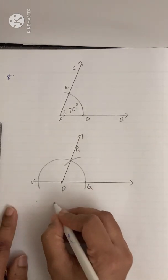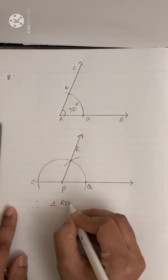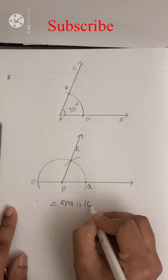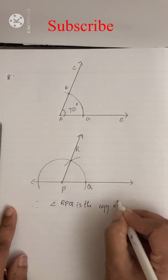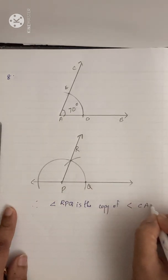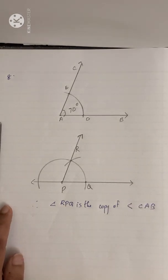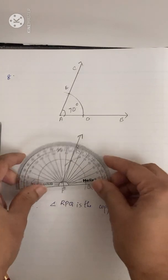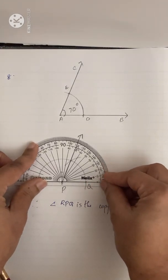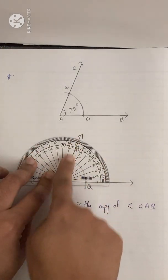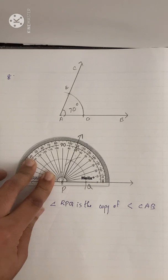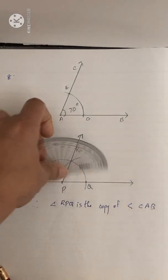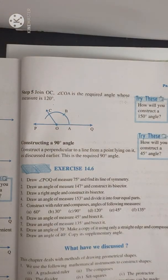Therefore angle RPQ is the copy of angle CAB. You can check with your protractor — this is exactly 70 degrees. Now let's do question number 9: draw an angle of 40 degrees and copy its supplementary angle.